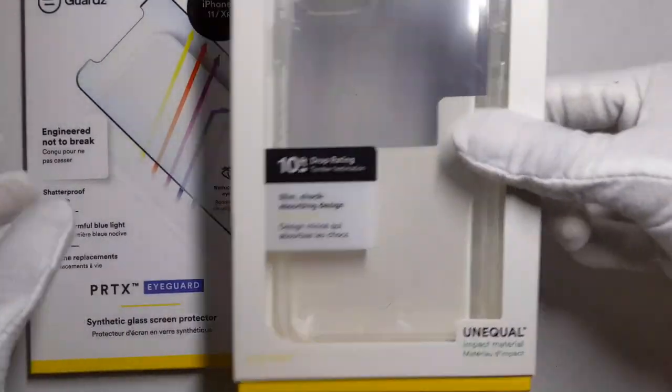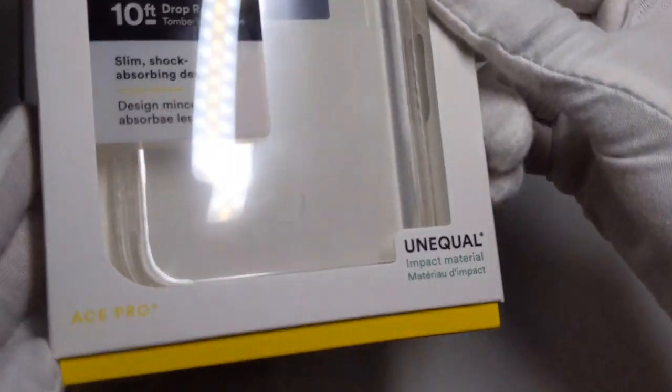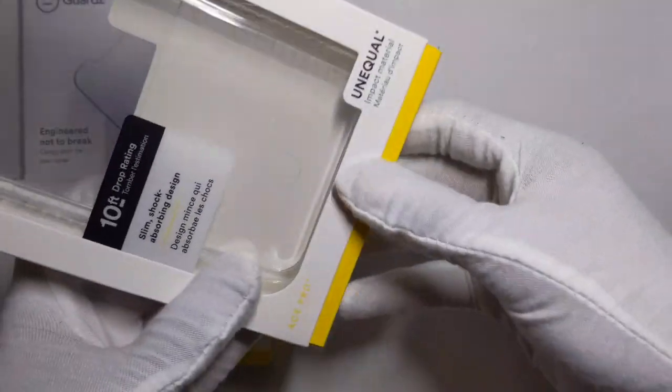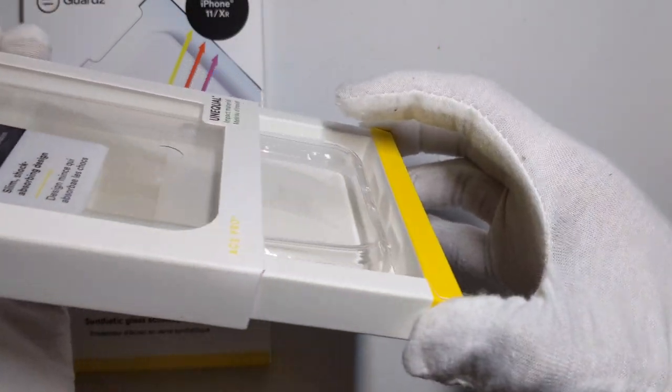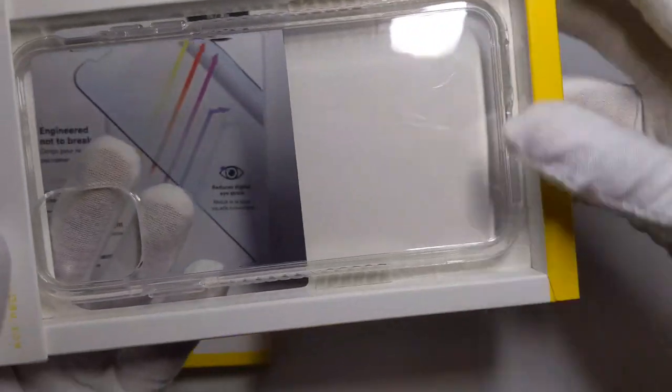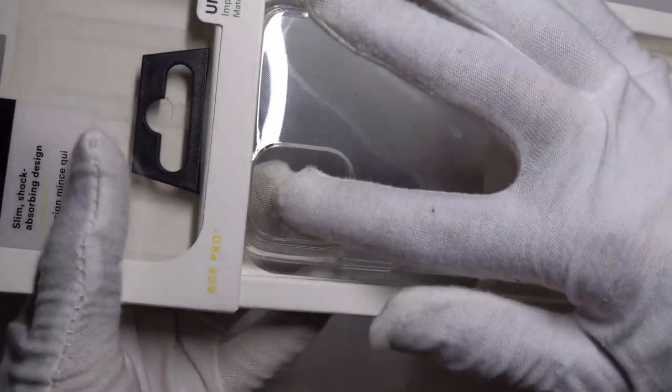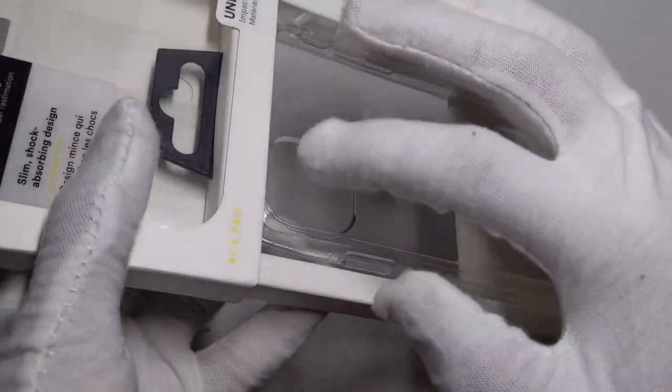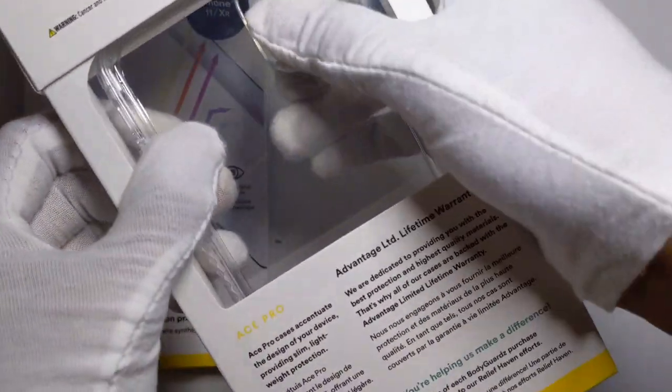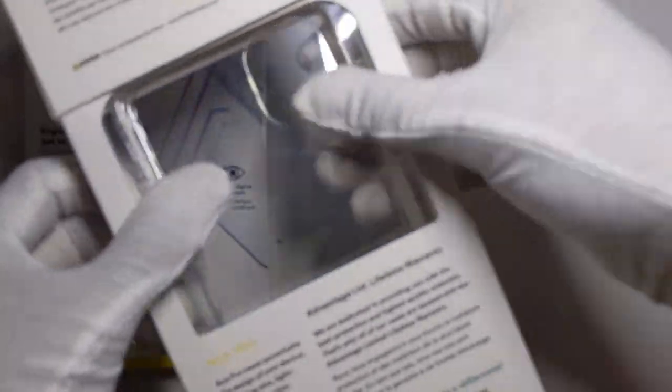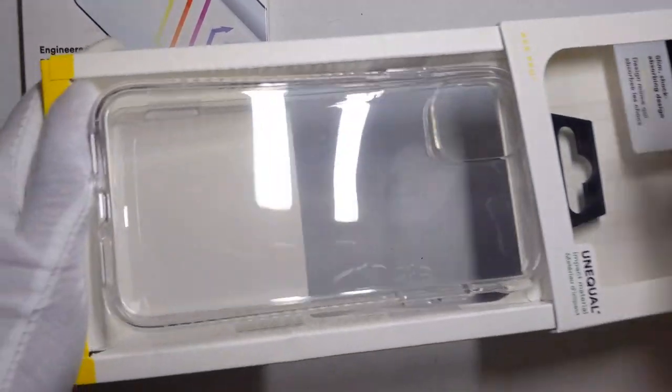We have the Unequal Ace Pro, again for the iPhone 11. They have many cases available for different types of phones. This one has protection around the camera as you can see, either it's that or the plastic around it. We're gonna figure out how to open this real quick, I will be right back.